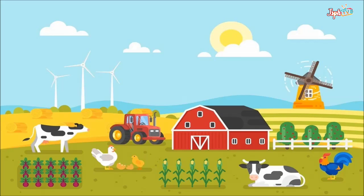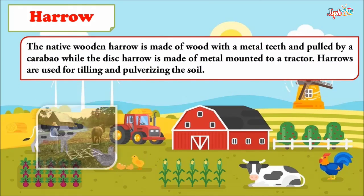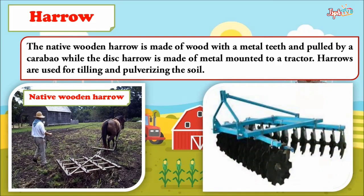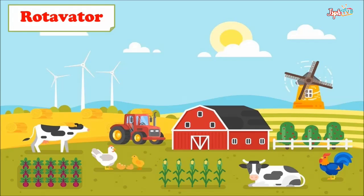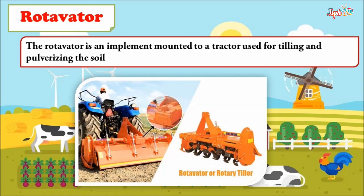The plow is specifically used for tilling large areas, making furrows, and inter-row cultivation. We have the native plow and the disc plow. Next, the harrow: the native wooden harrow is made of wood with metal teeth and pulled by a carabao, while the disc harrow is made of metal and mounted to a tractor. Harrows are used for tilling and pulverizing the soil. The rotavator is an implement mounted to a tractor also used for tilling and pulverizing the soil.